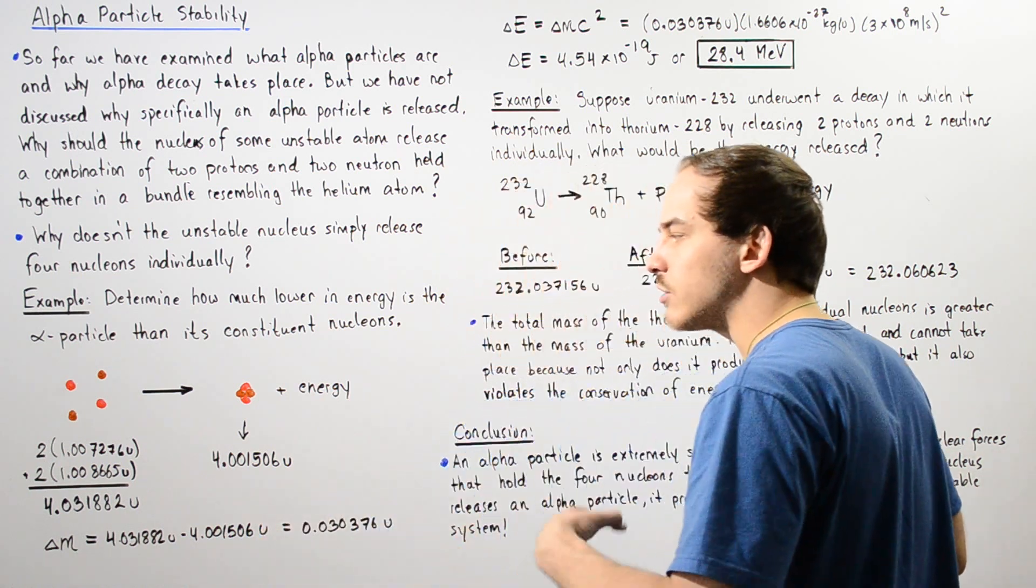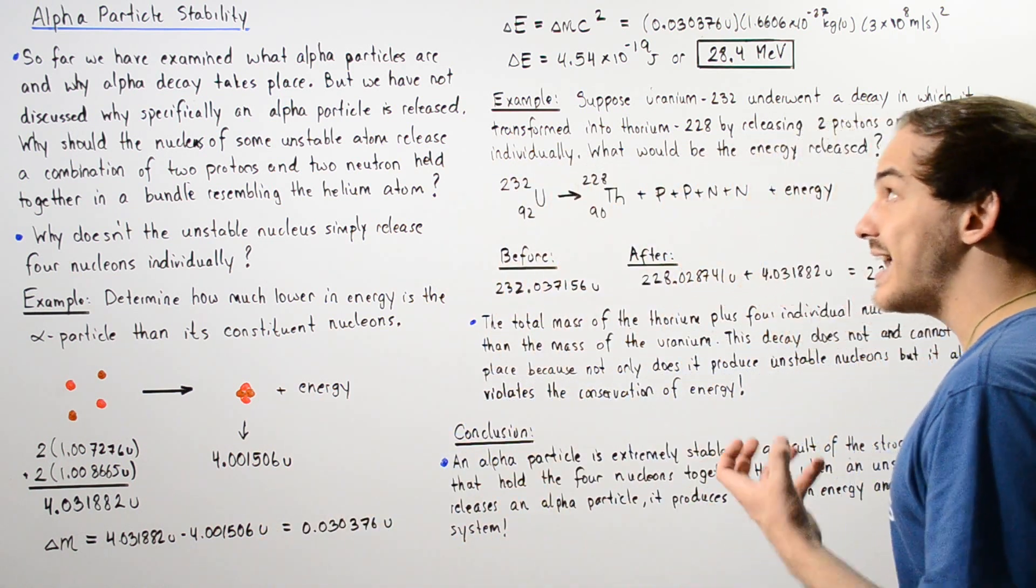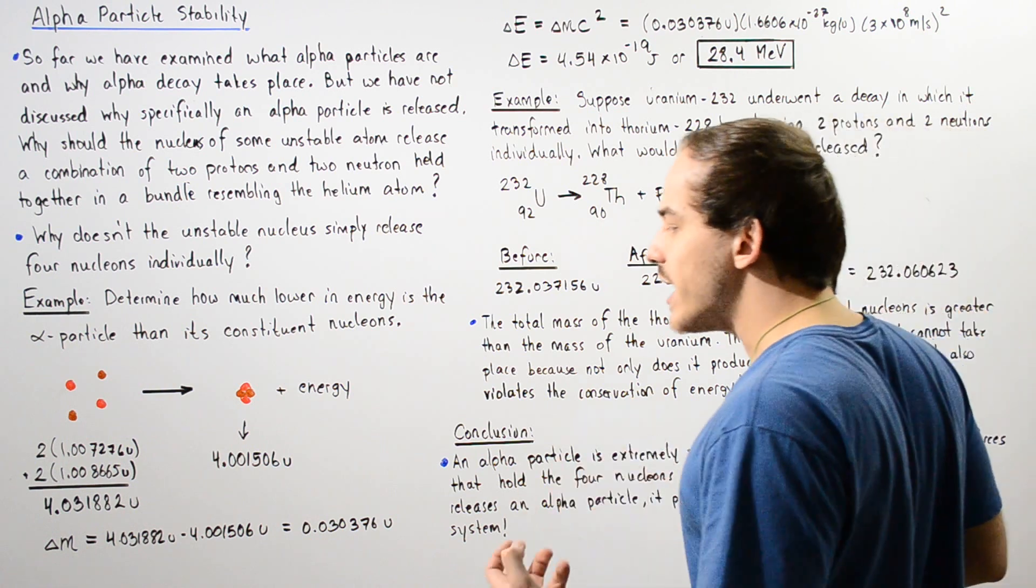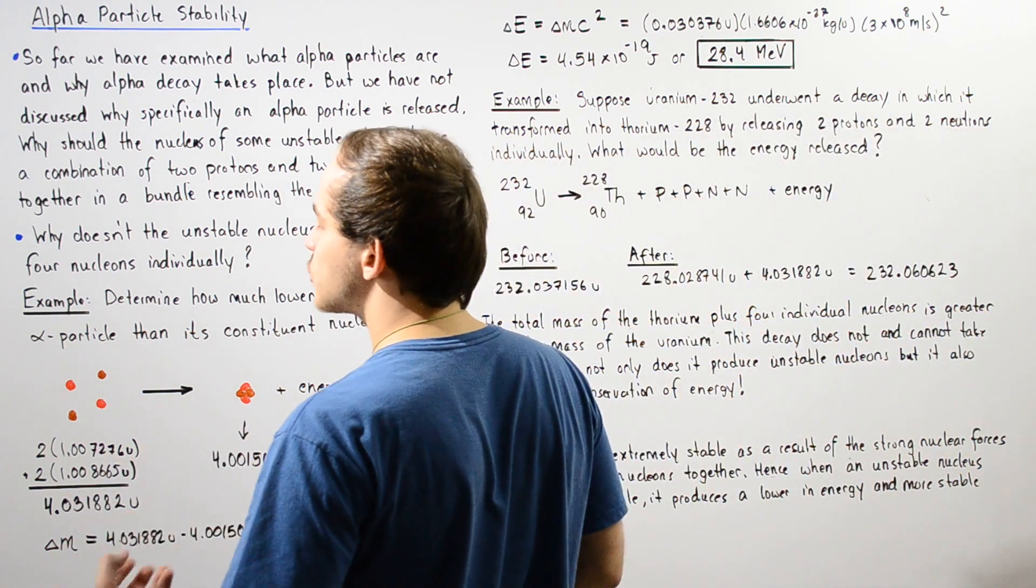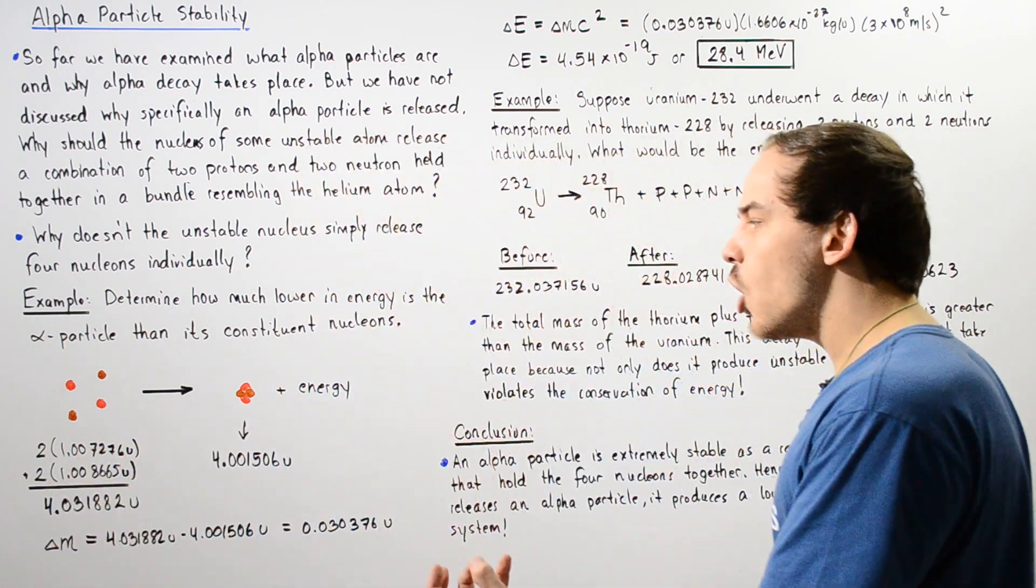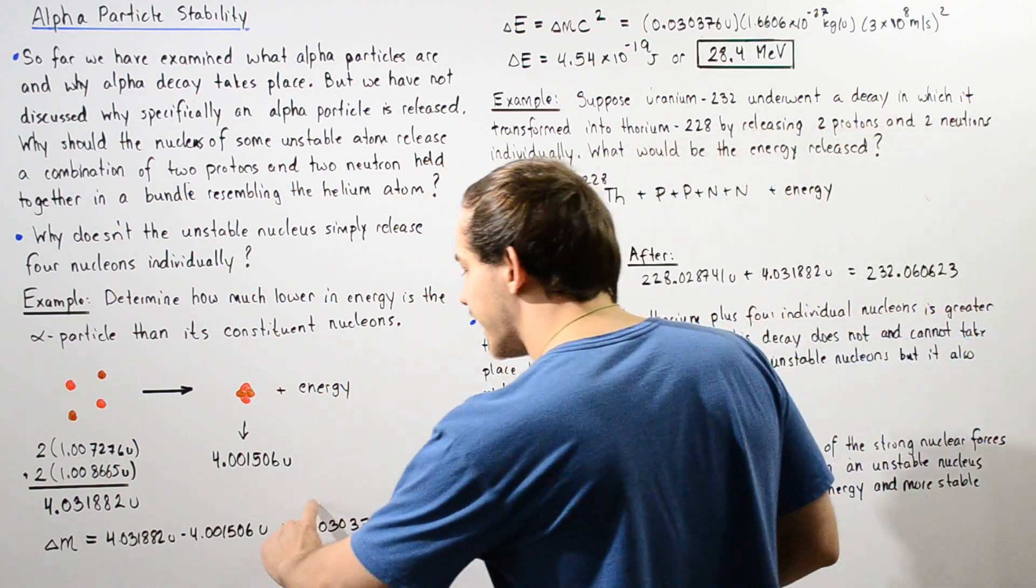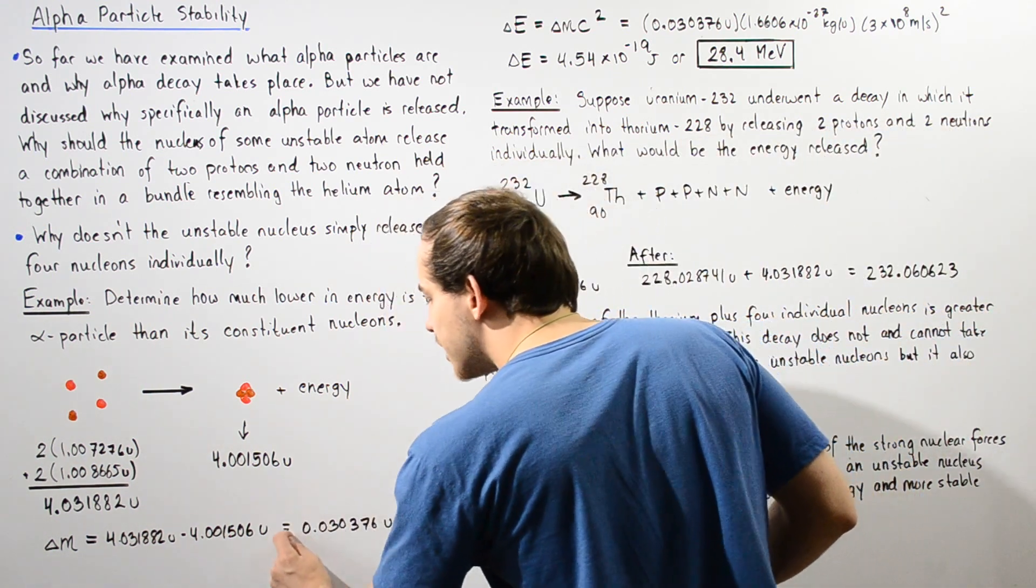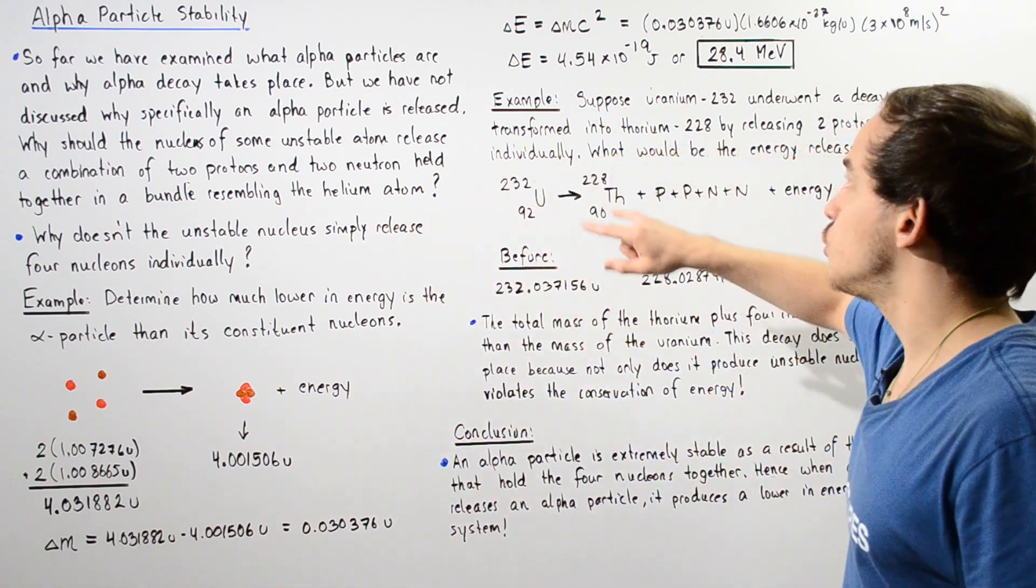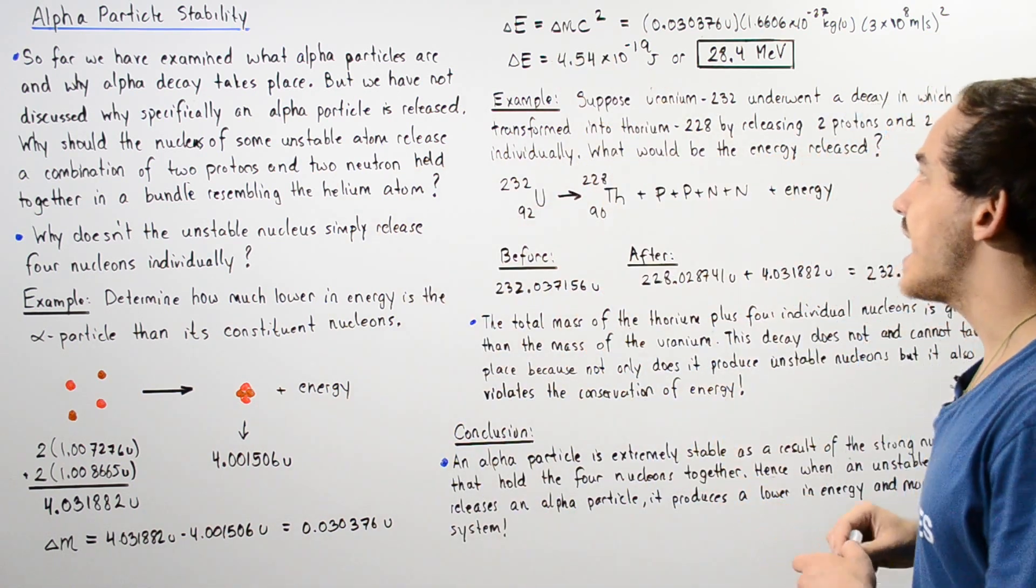So this is our change, our decrease in energy and the question is, where does this mass actually go? Where the mass goes into transforming into energy. And to calculate how much energy this change in mass corresponds to, we use the rest mass energy.